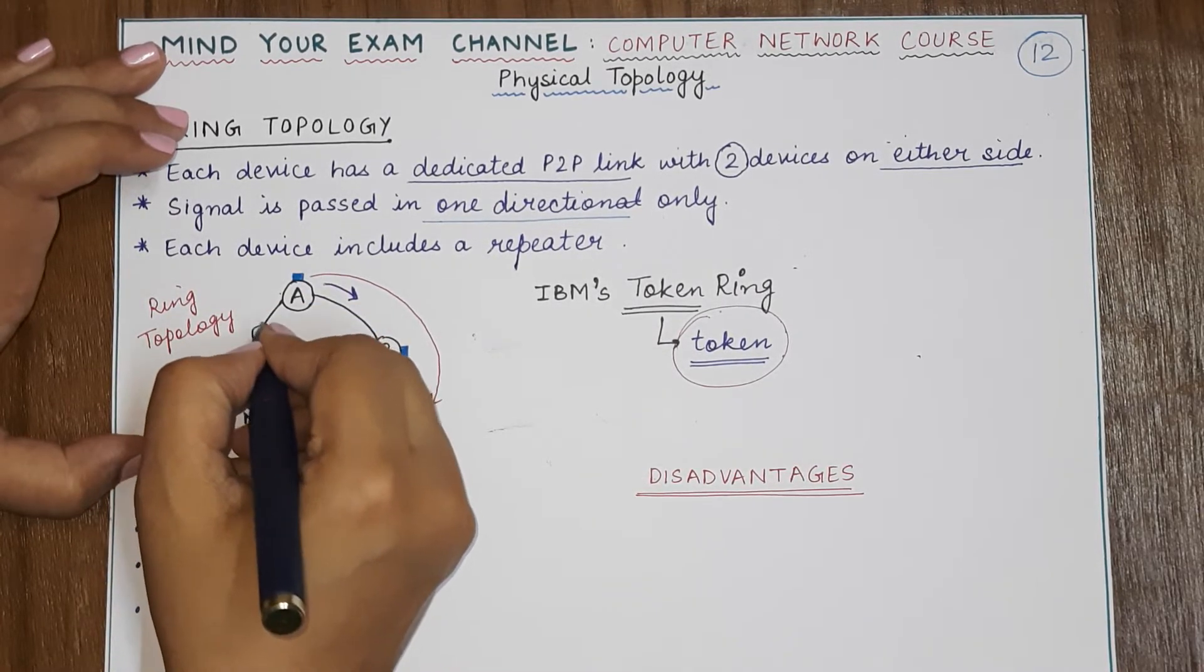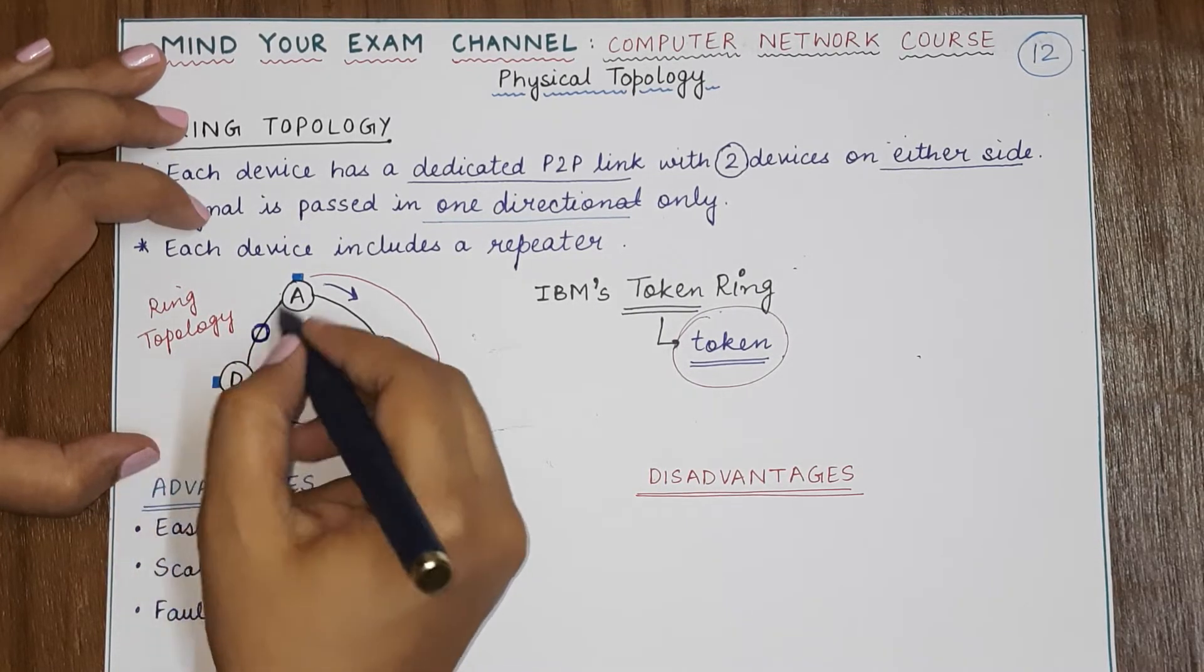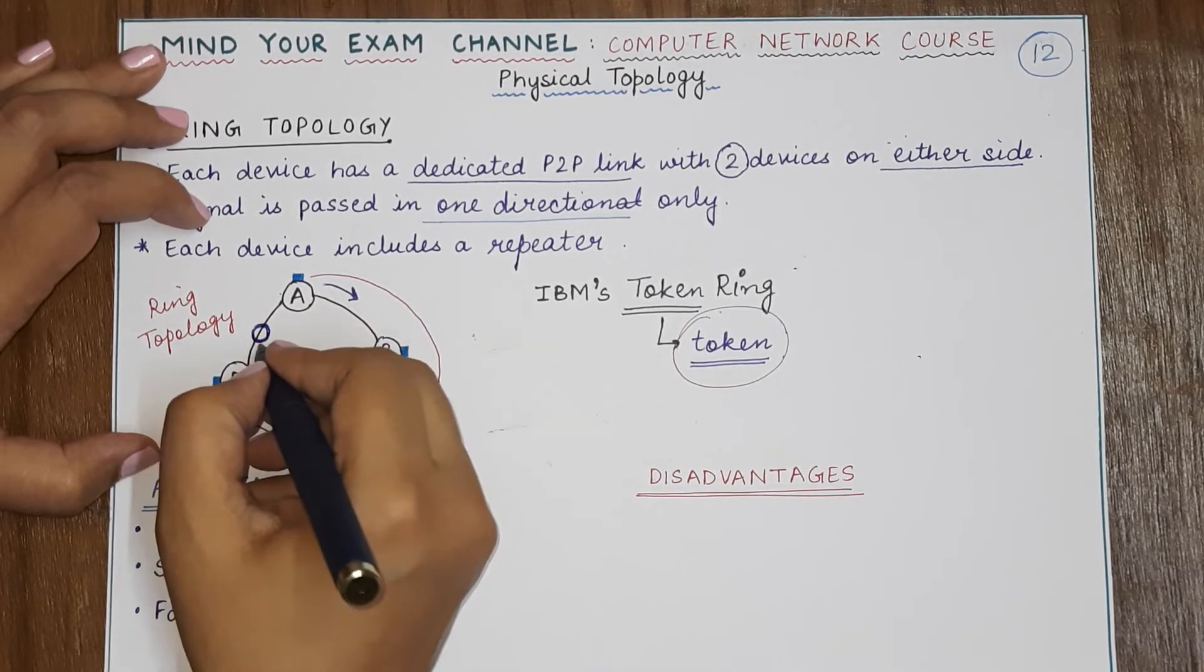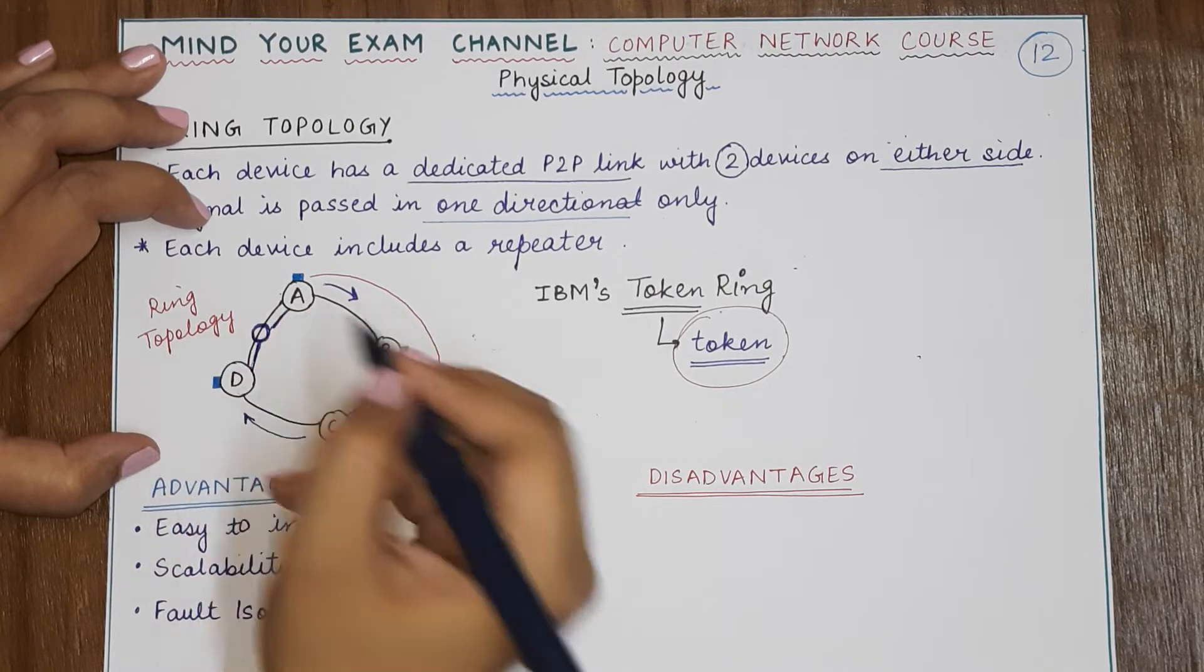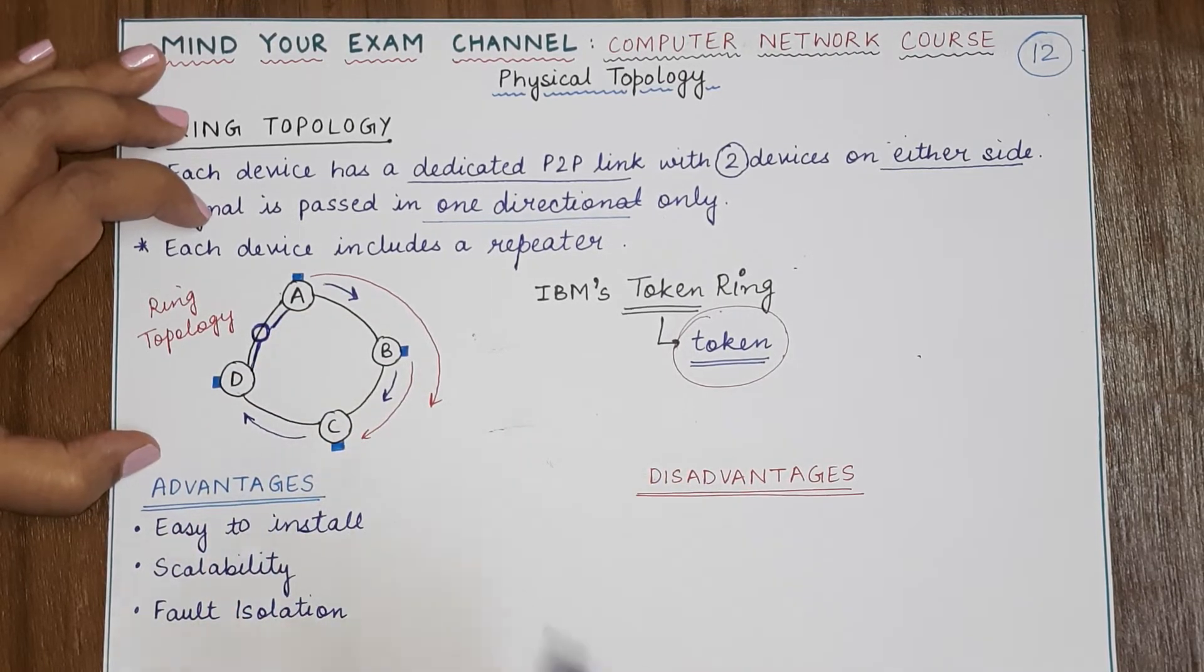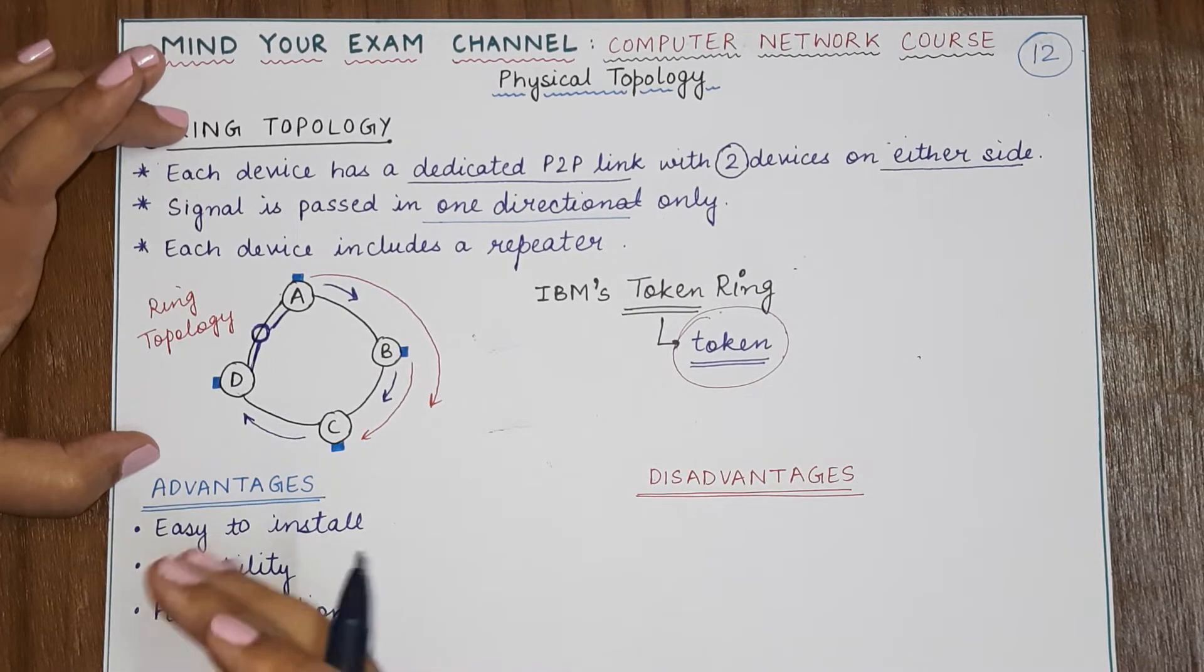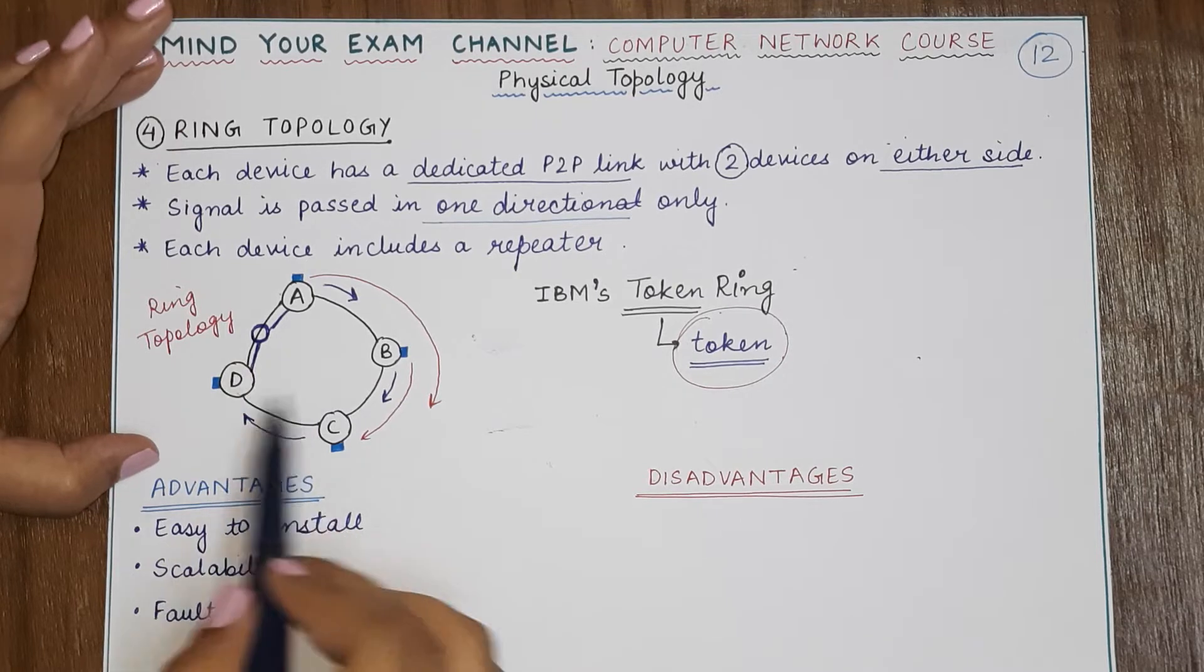So even if new devices have to be added, every device will only need two new connections. So if a new device has to be added here, this old link connecting A and D will be broken down and new links connecting the new device to D and the new device to A will be set up. So it is very easy to create a larger network and to add and delete devices in a ring topology.